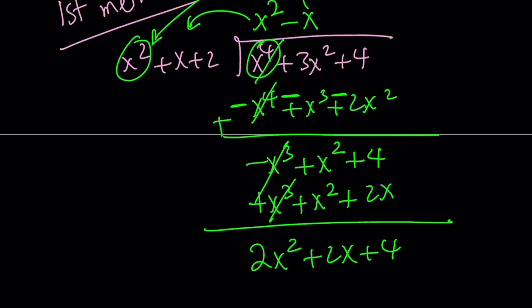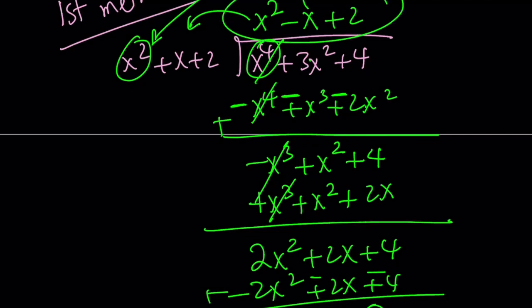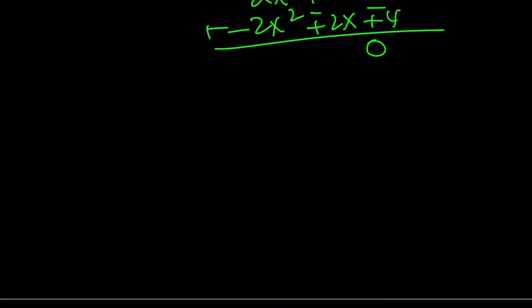And that should perfectly work because we're supposed to get zero remainder. Now, notice that x squared plus x plus 2 goes into this two times exactly. And when you multiply, you're going to get the same thing. And when you negate and add, you're going to get zero remainder. So the answer is going to be x squared minus x plus 2 as before. Right? So as a conclusion,